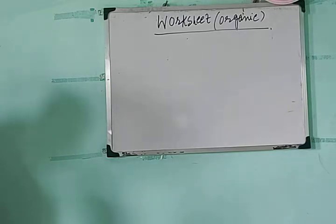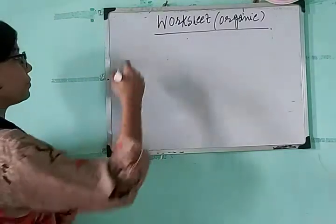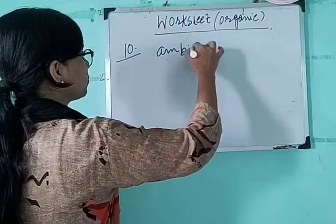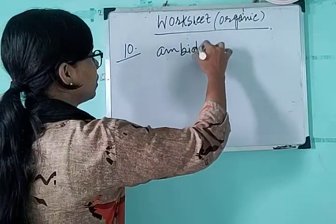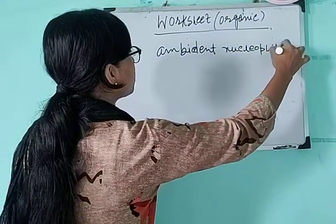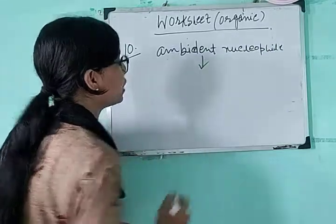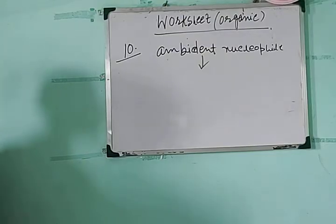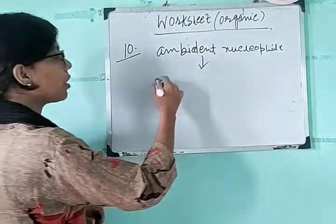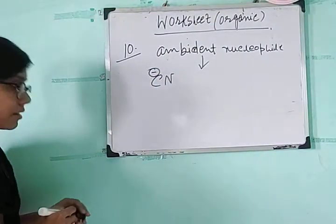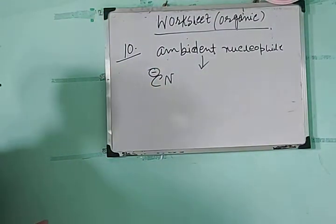Question ten asks: give an example of an ambident nucleophile. Ambident nucleophiles are those nucleophiles that can attack by utilizing two sites. An example of an ambident nucleophile is CN⁻.